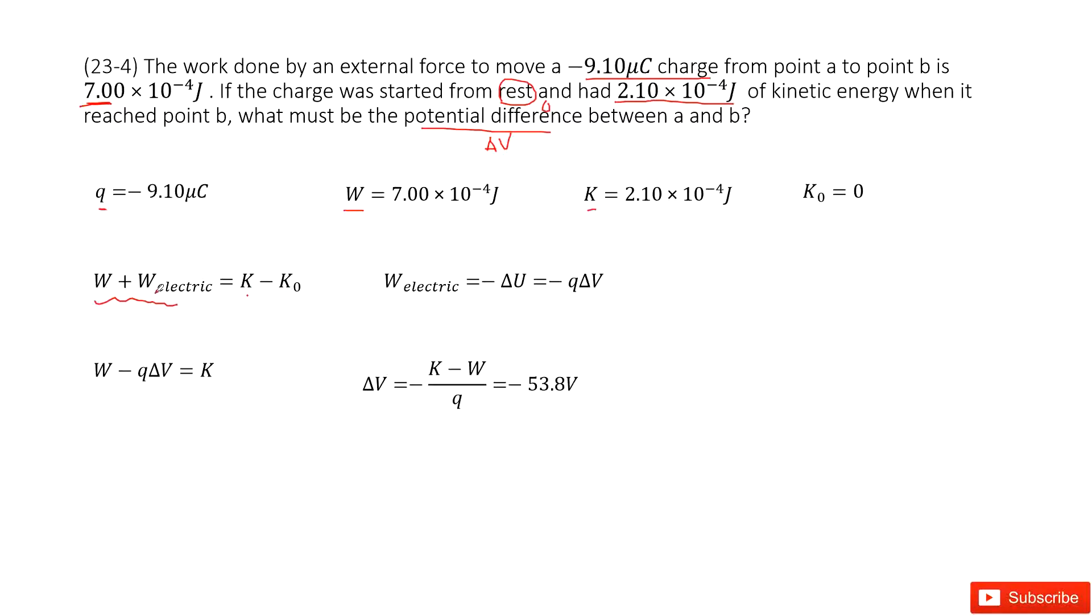W is given. It looks like we need to find the electric W, because this work done on this particle has two parts. The first part is by this external force, the second part is electric force. So the electric work done is equal to the negative of the change of the electric energy.